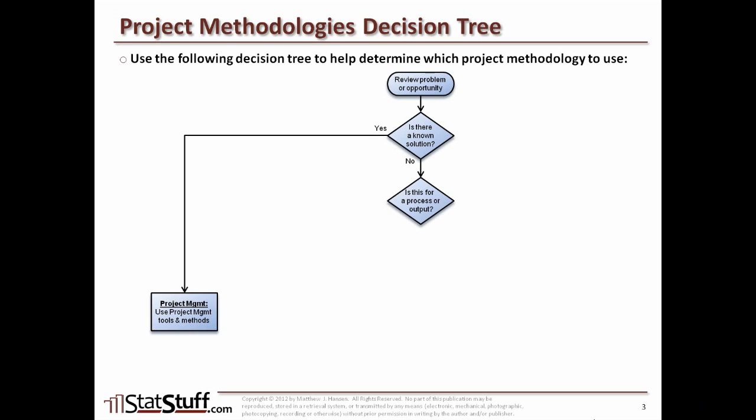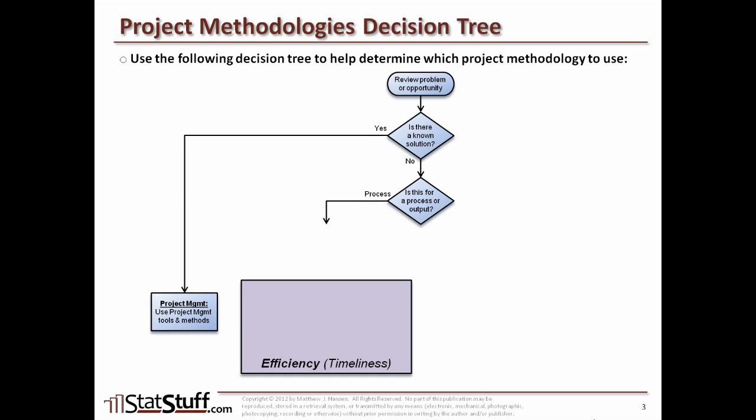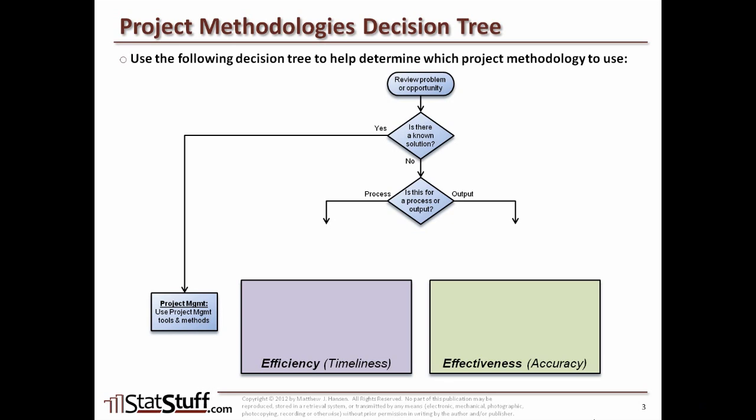Now, if there is no known solution, then what we might ask next is: is there a process or output that this is affecting? If it's for a process, we'll move to the efficiency path, which focuses on process and timeliness within that particular process. However, if it's for an output, then it's going to point us toward project opportunities that fall under effectiveness — those focusing on accuracy. But let's explore the process side a little further.